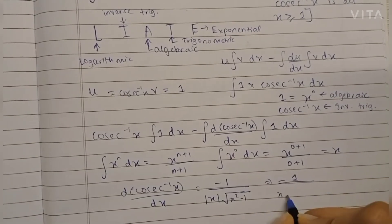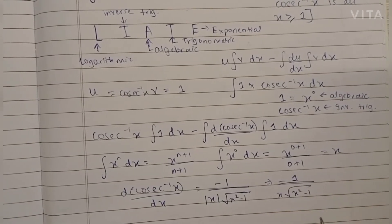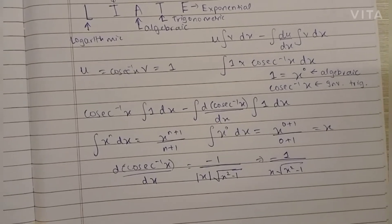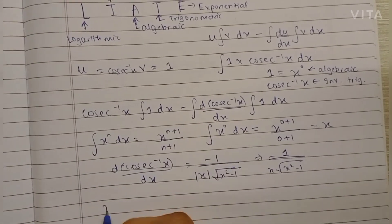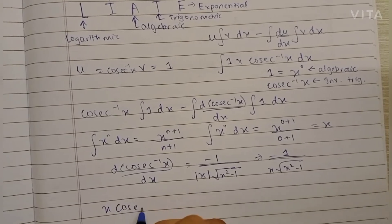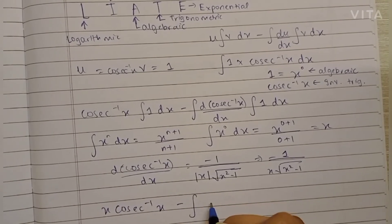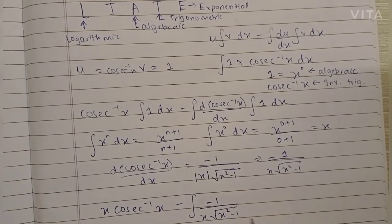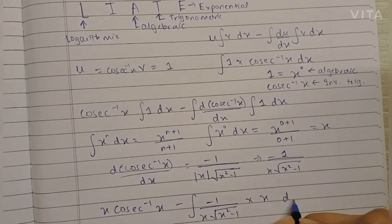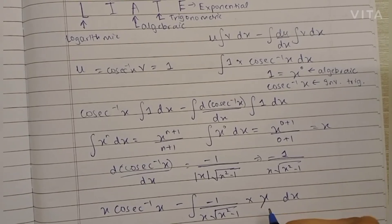So now let's substitute it in the formula. Integral of 1 becomes x, so we have x·cosec⁻¹(x) minus the integration of minus 1 upon x√(x² - 1) into x dx. X gets cancelled.